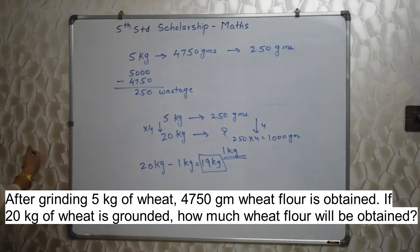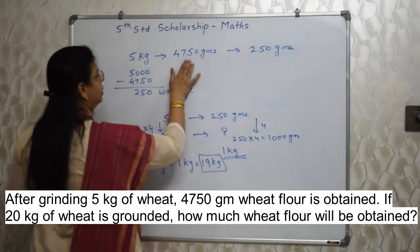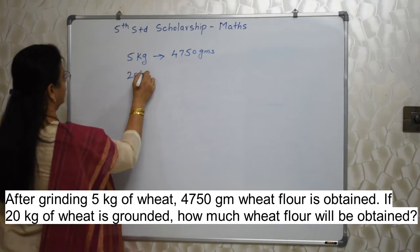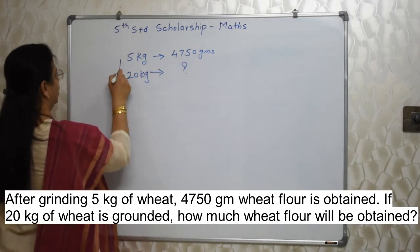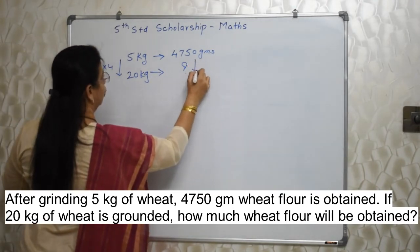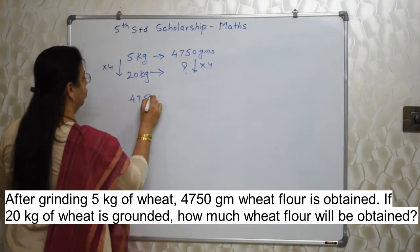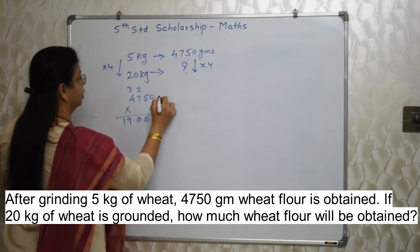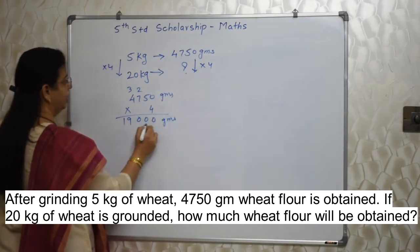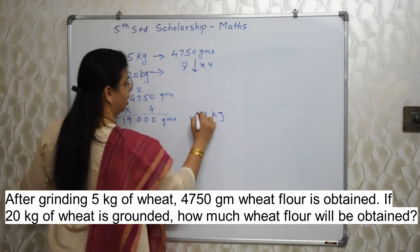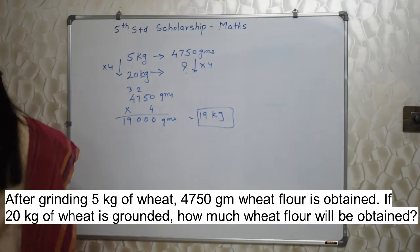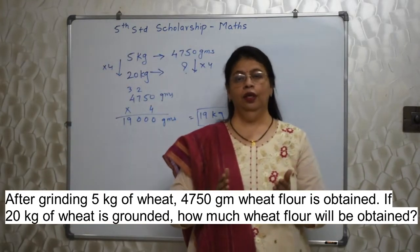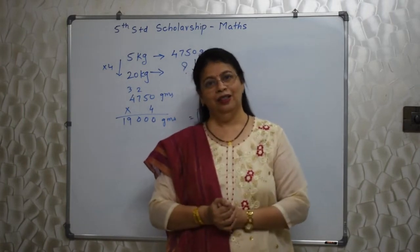Some students may ask: what is the need of finding wastage? We can go ahead directly. Yes, we can. 5 kg wheat gives 4750 grams of flour; 20 kg wheat — this is into 4, so obviously this is also into 4. So 4750 into 4 is 19,000 grams, and 19,000 grams means 19 kg. The answer won't change. Students, there are multiple ways to solve sums. As long as your concepts and method are correct, you will get the correct answer.